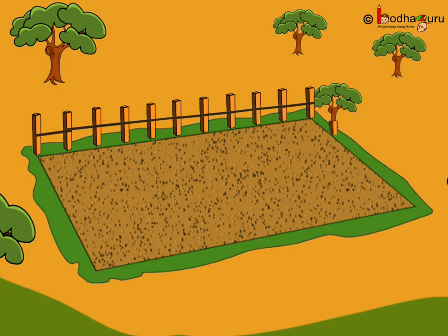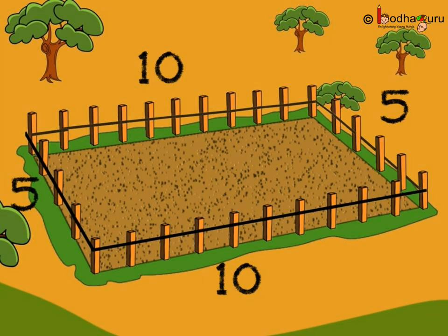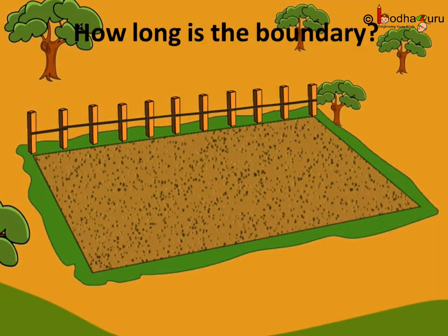Next, he put 1, 2, 3, 4, 5 pieces of wire on this side. Next, again he put 10 pieces of wire and again 5 pieces of wire. So total how many pieces of wire did he use? He used 10 plus 5 plus 10 plus 5 which is 30 pieces of wire.